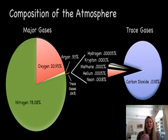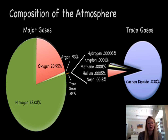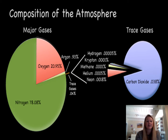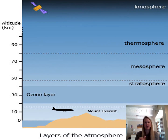If you want to look at what makes up the majority of the trace gases, that would be CO2, and then we have hydrogen, krypton, methane, helium, neon, argon, etc. Those are the main components of the atmosphere. The atmosphere is layered, and we're going to go through and discuss each layer.